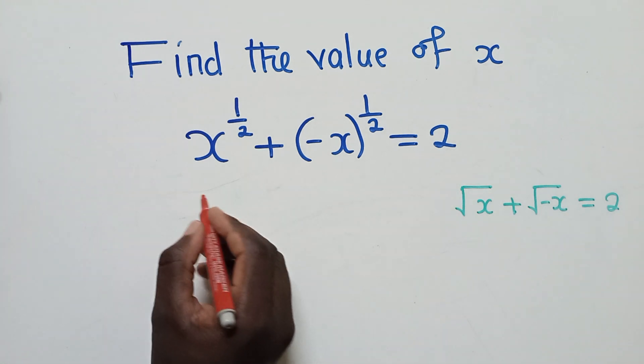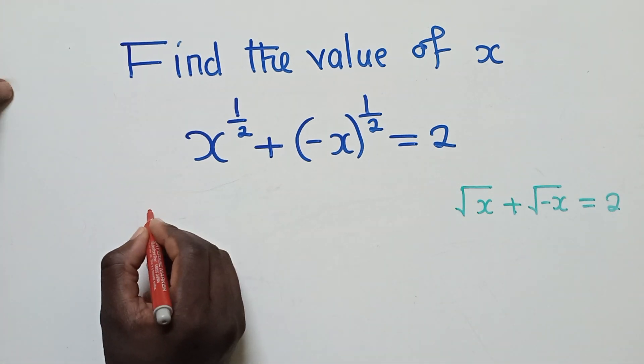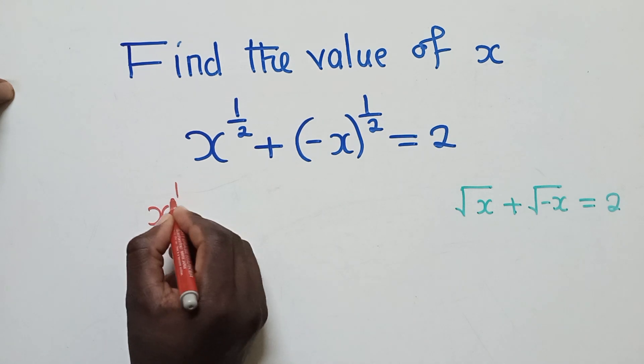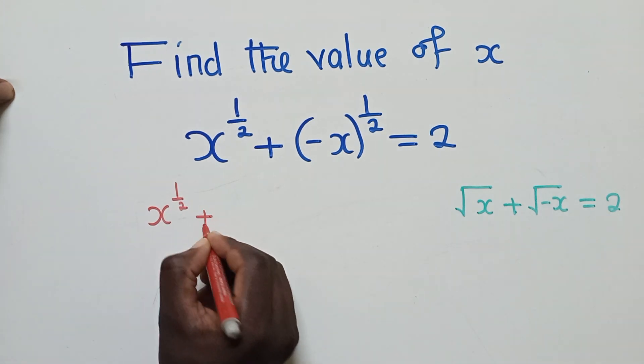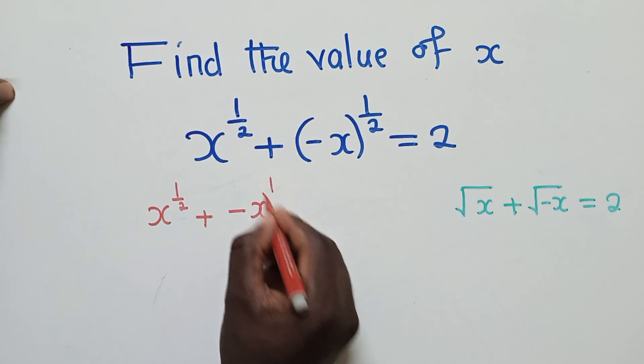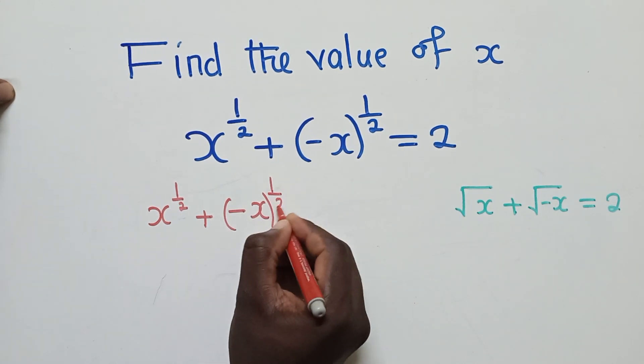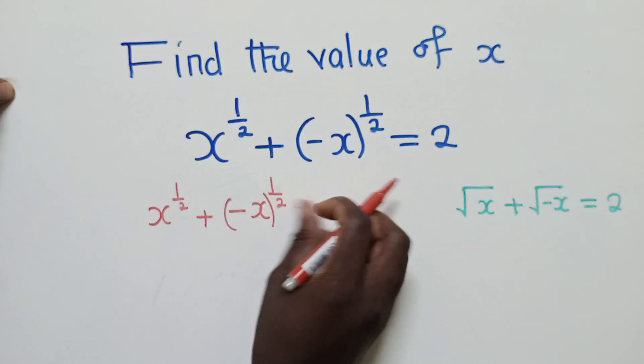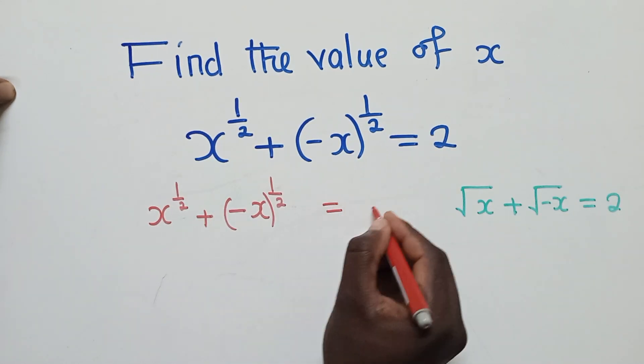Okay, so now what we're going to do here, we're going to say x power 1 over 2 plus negative x power, inside the brackets, power 1 over 2 is equal to 2.